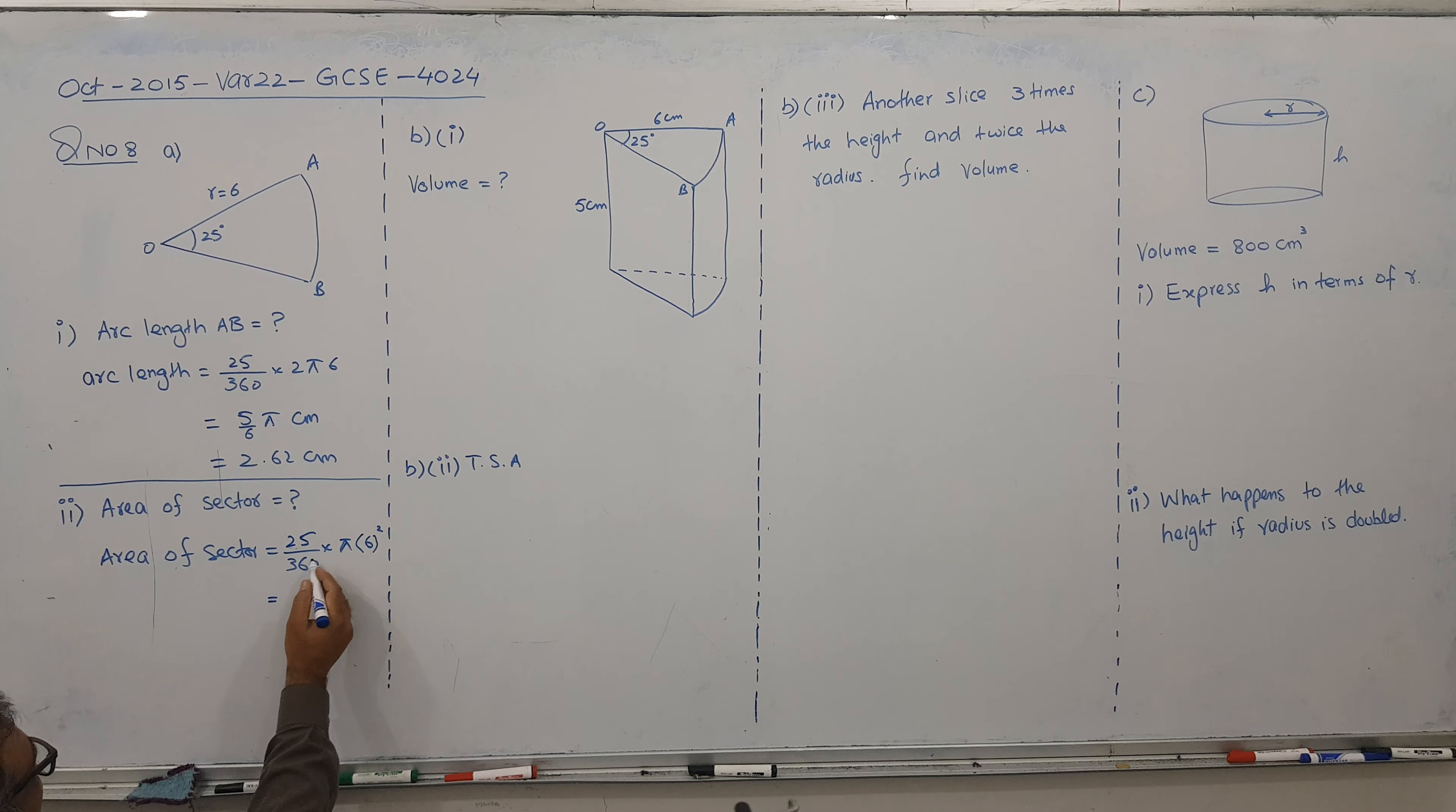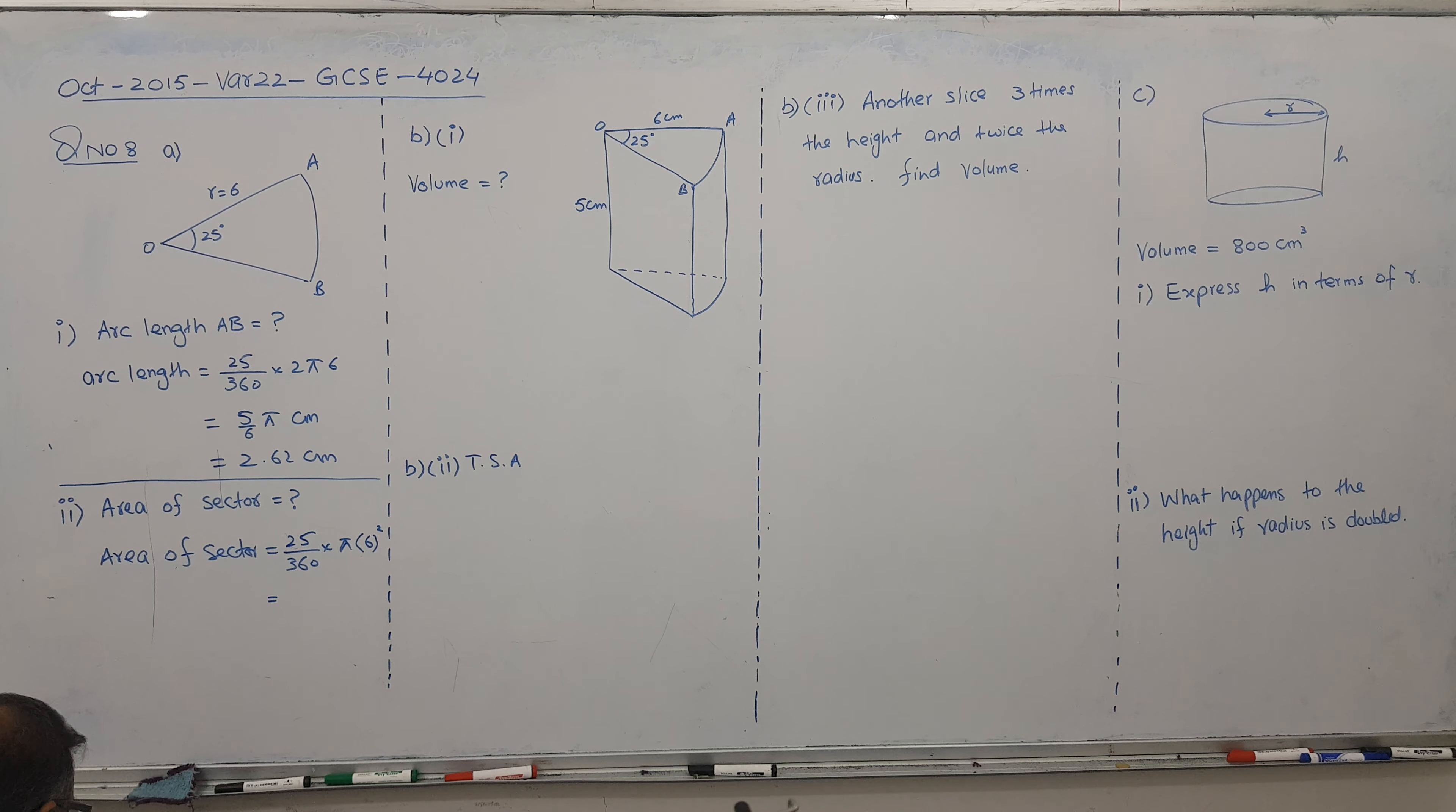This is cancel 10. So 36 cancel. So we've got a 10. So 25 divided by 10. It is coming 5 by 2 pi. Okay. Now our answer comes here. 7.85 centimeter square. So we have finished two parts.